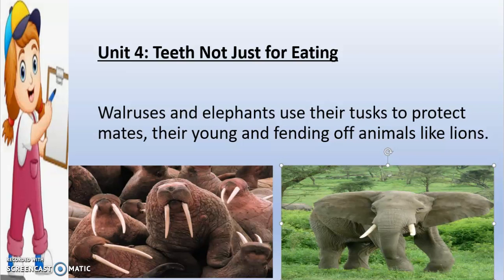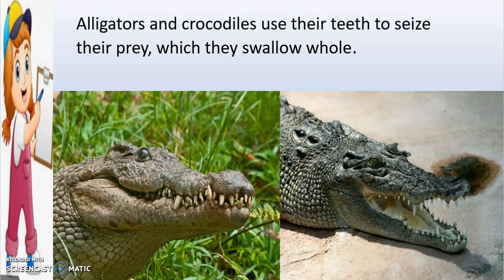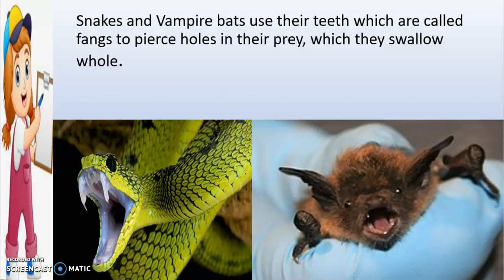Animals like walruses and elephants use their tusks to protect their young and fend off animals like lions. Alligators and crocodiles use their teeth to seize their prey, which they swallow whole. Some animals like snakes and vampire bats use their teeth, which are called fangs, to pierce holes in their prey.